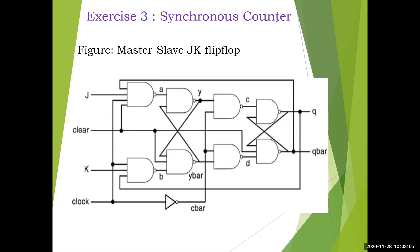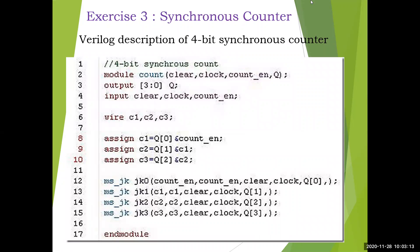Now I will show you the program. The first module is named 'count'. The inputs are clear, clock, and count enable — all scalar — and the output is Q, a 4-bit counter declared as [3:0]. We have 3 AND gates in the first figure, with outputs called C1, C2, and C3. The assign statements are: C1 = Q[0] AND count_enable. C2 = Q[1] AND C1. C3 = Q[2] AND C2. So just like expressions, we have written the gate-level diagram.